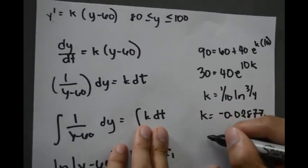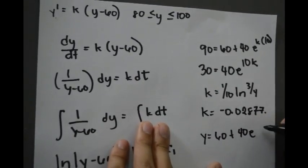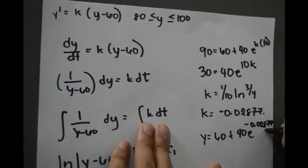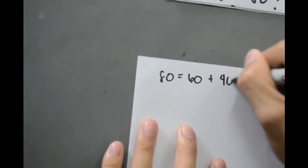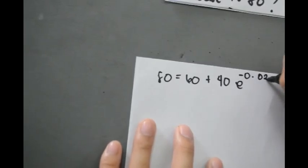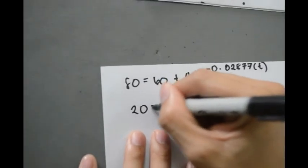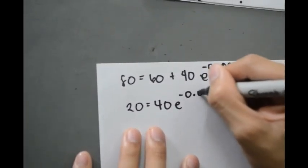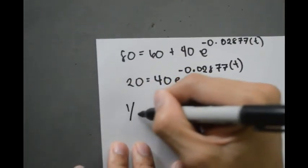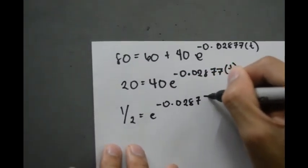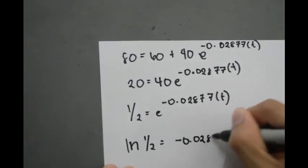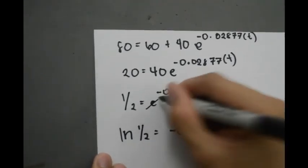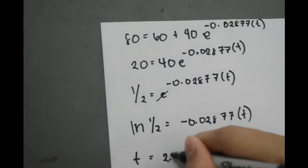The cooling model is y equals 60 plus 40 times e raised to negative 0.02877 times t. Finally, when y equals 80, we obtain 80 equals 60 plus 40 times e raised to negative 0.02877 times t, so one half equals e raised to negative 0.02877 times t. Taking ln of one half equals negative 0.02877 times t and solving, t is equivalent to 24.09 minutes.